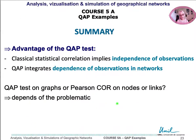So finally, through these three examples, we showed the advantages of using the QAP test correlation. It allows to evaluate correlation between different networks, taking into account the dependence of observations in networks. However, the choice of the QAP test rather than the Pearson correlation on nodes or linkages depends on the problematic — it is not always relevant to use a QAP correlation depending on the question you address.